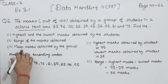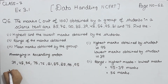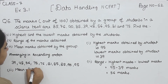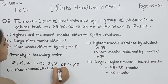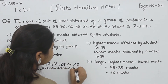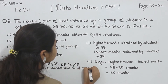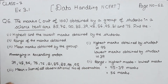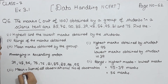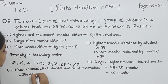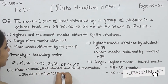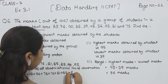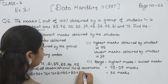Now part 3: mean mark obtained by the group. So we have to find out the mean mark. Mean is equal to sum of all observations divided by number of observations. So we start adding: 39 plus 48 plus 56 plus 75 plus 76 plus 81 plus 85 plus 85 — 85 is 2 times — plus 90 plus 95.